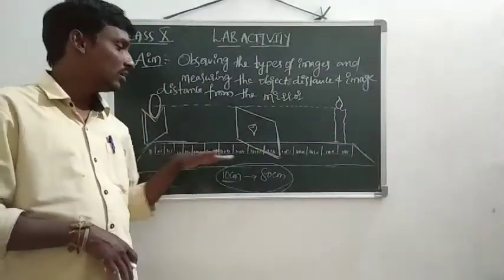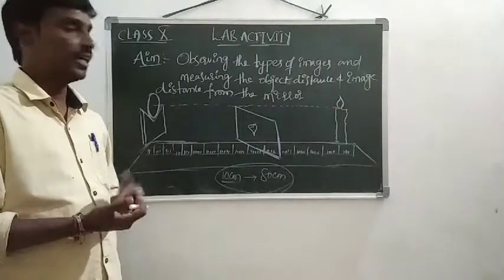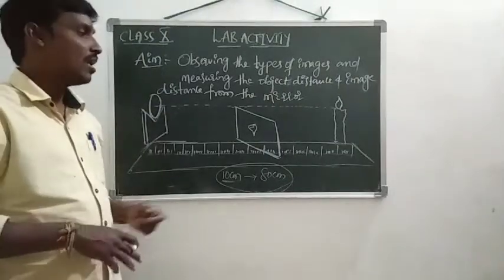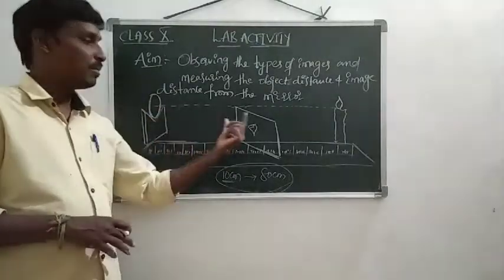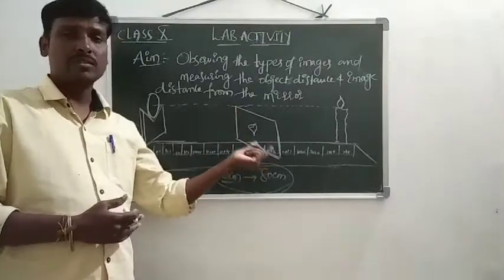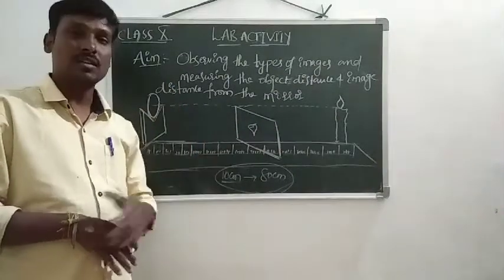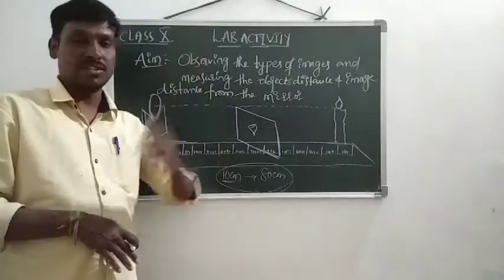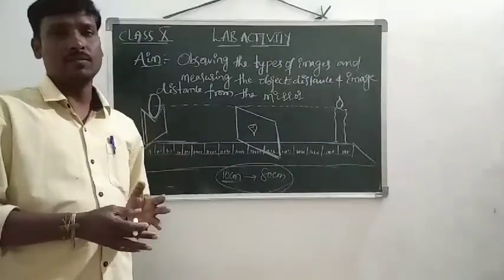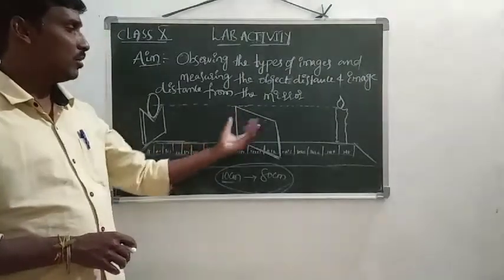We need to maintain a table with the following columns: distance of the candle from the mirror — the object distance — and distance of the paper from the mirror — the image distance. Also record the characteristics of the image: whether it is enlarged or diminished, and whether it is erect or inverted.